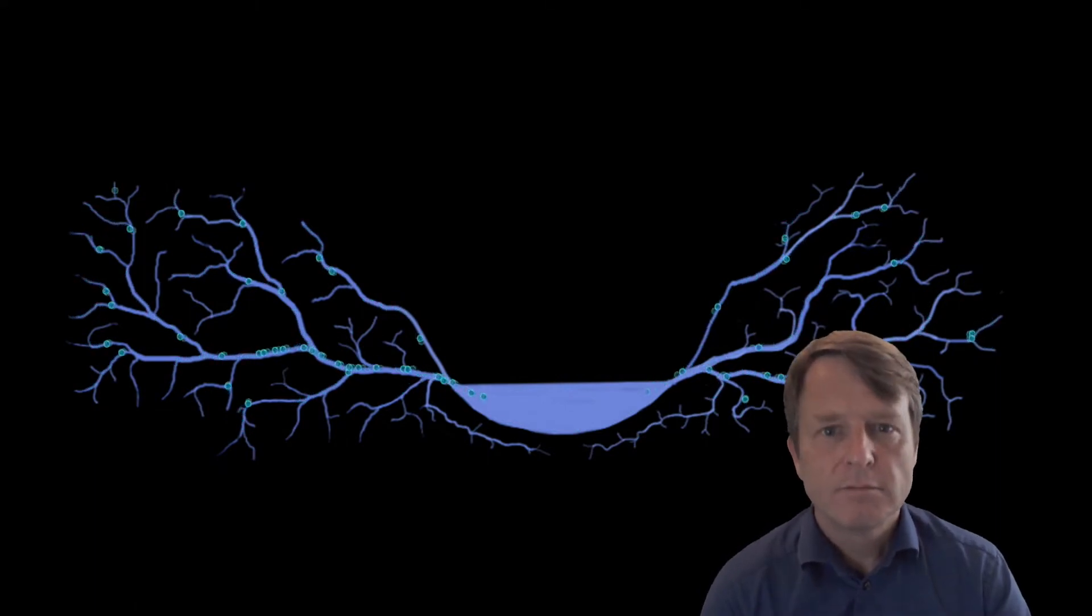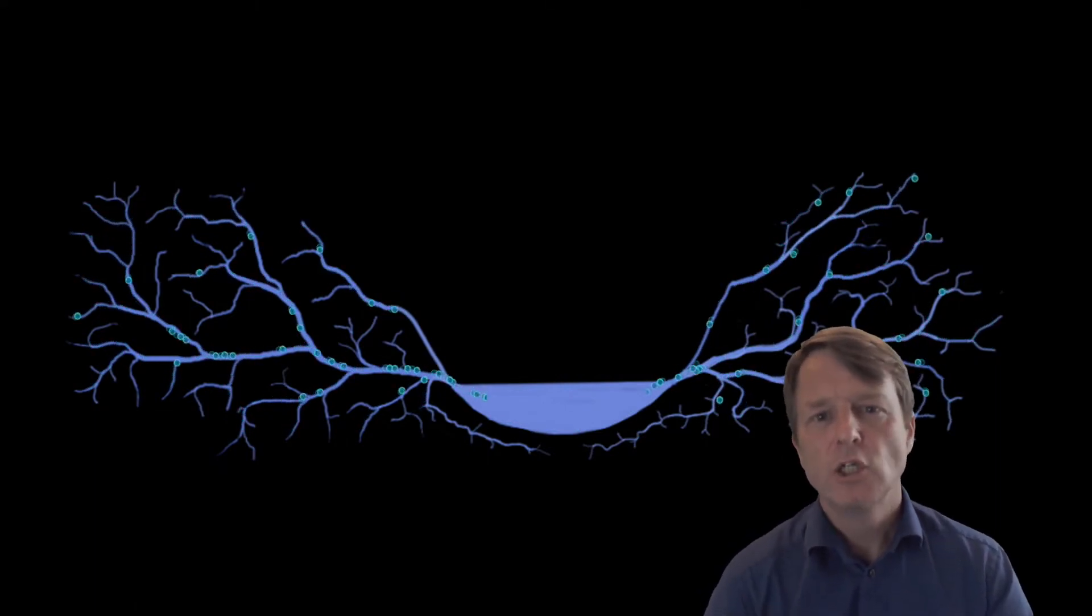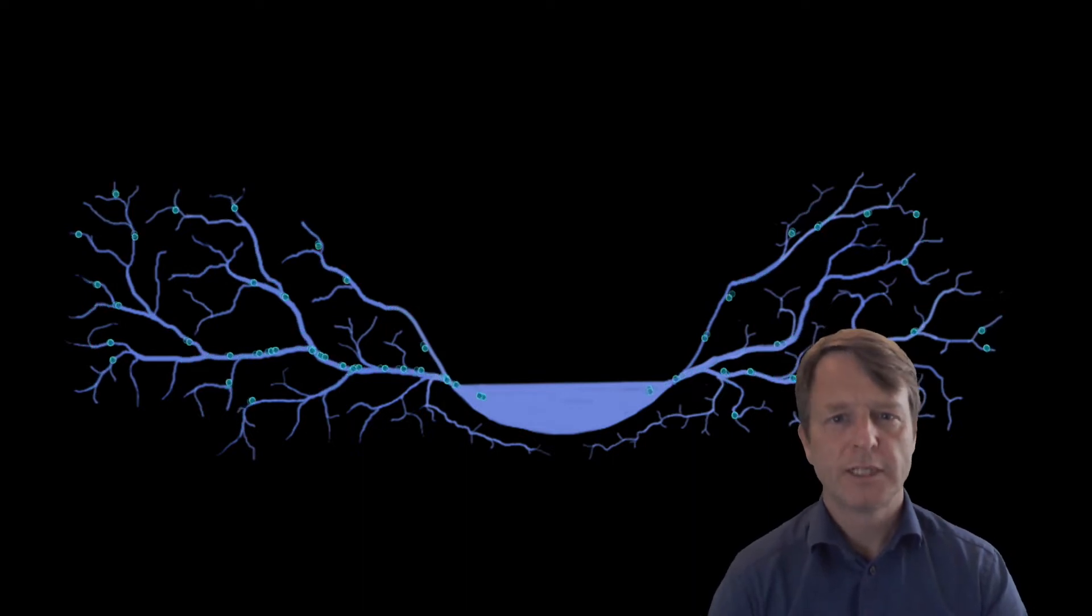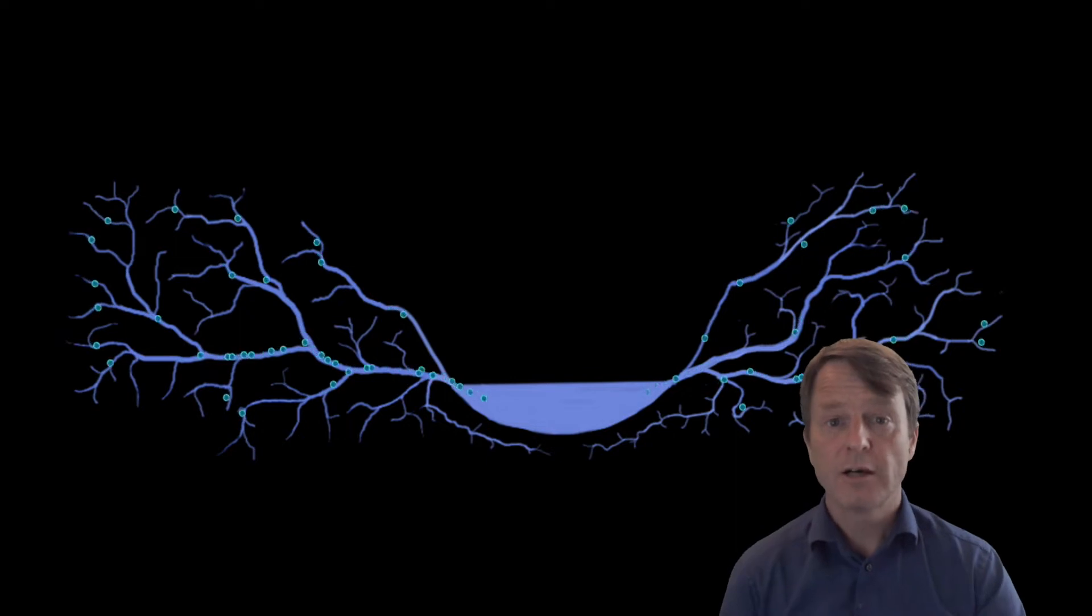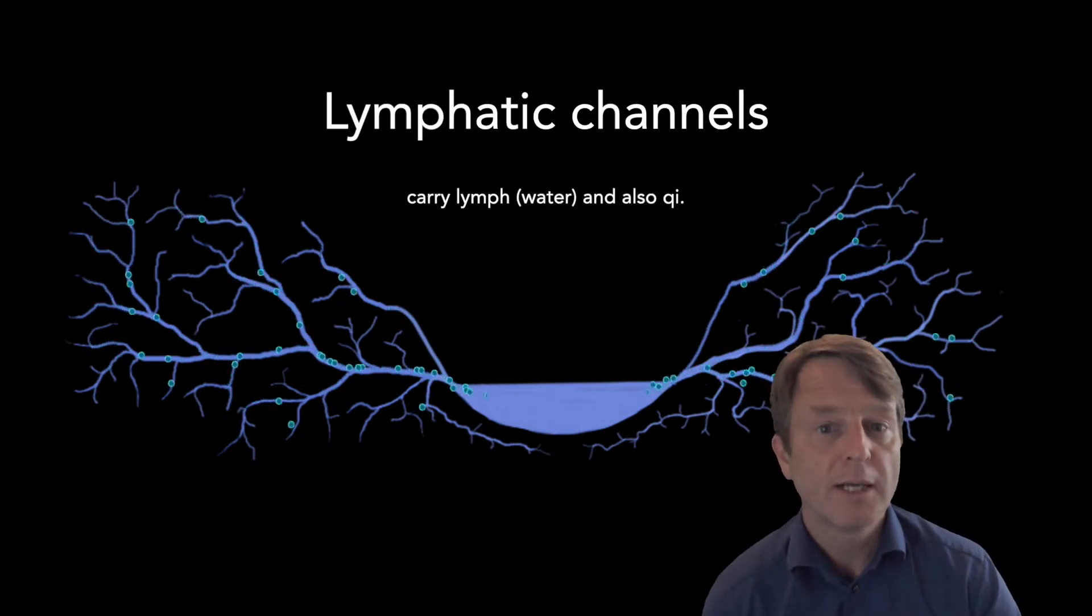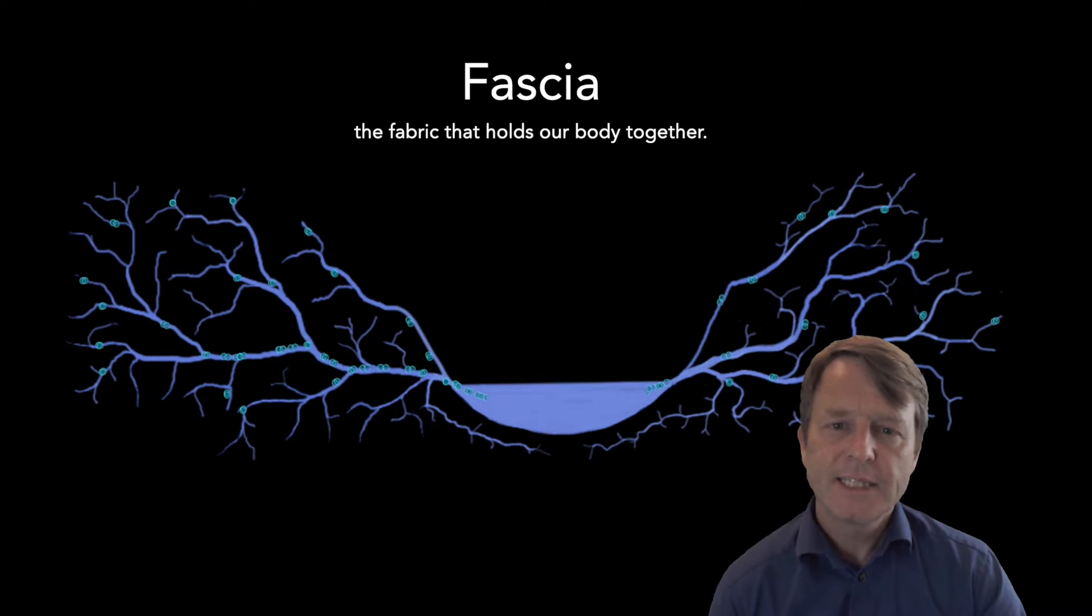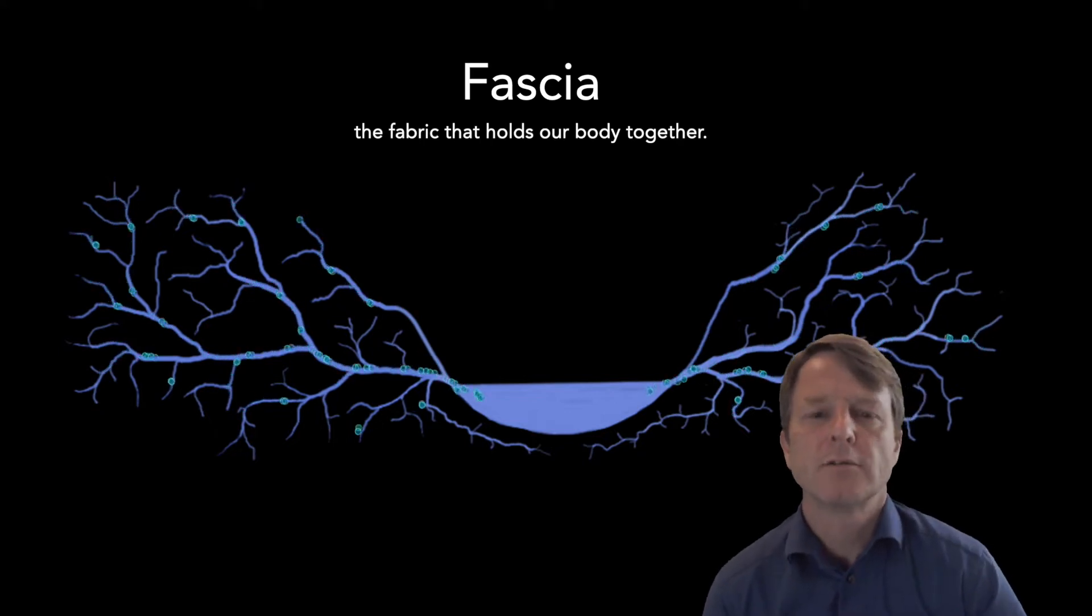Now, do these exist in the body? Do we have channels in our body that carry, for instance, water? Yes, we do. They are called lymphatic pathways and they are lined by something called fascia, and this is exactly what the acupuncture channels are.